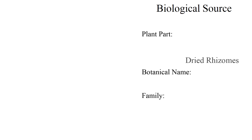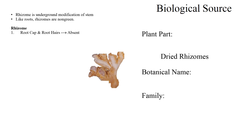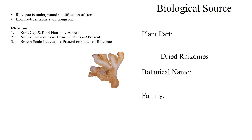The plant part used here is dried rhizome. Rhizome, as we know, is an underground modification of stem. Like root, rhizomes are non-green in color. A rhizome differs from root in three points: root cap and root hairs are absent in the case of rhizome; nodes, internodes, and terminal buds are present; and brown scaly leaves are present on the node of rhizome.